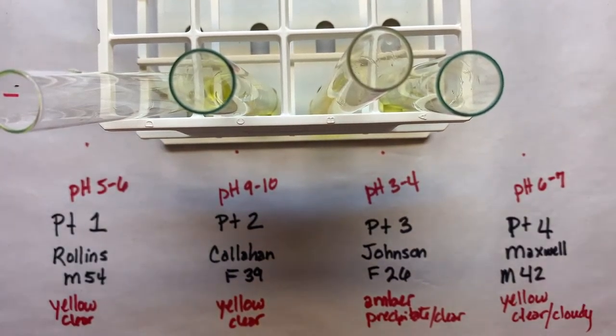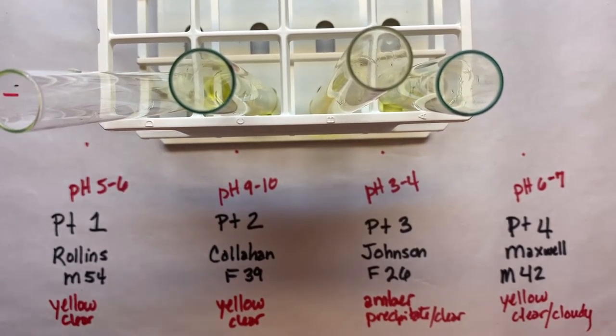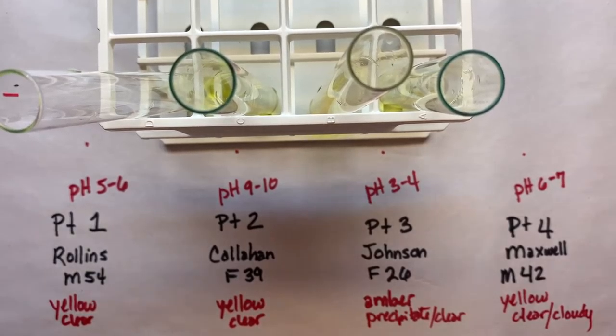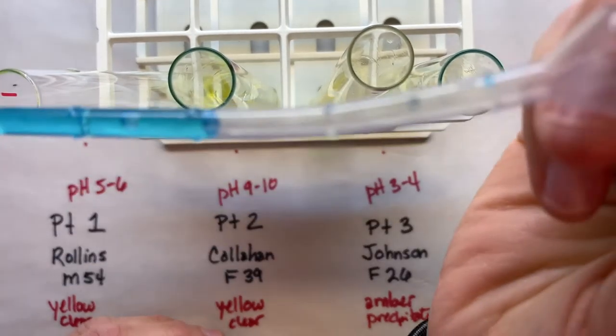And now we're going to do 10 drops of Benedict's solution, and then we're going to go over to our heat source where we've got our hot water. We're going to let this sit in it for two to three minutes. So here, let's count 10 drops.